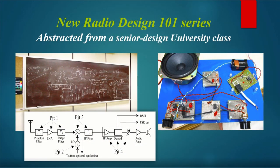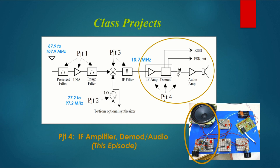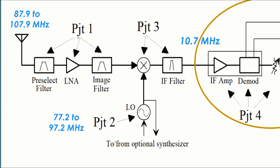If you've watched previous episodes in this series, you know that we're working towards designing and building an FM broadcast band receiver. We started with background material for project one, which is the design and construction of a low noise amp with associated filters.